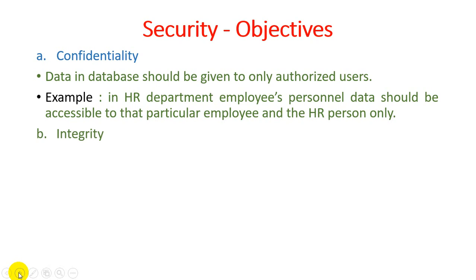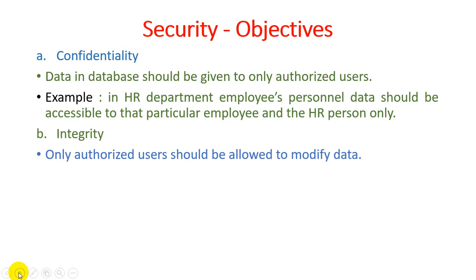Second is integrity — only authorized users should be allowed to modify data. The difference between confidentiality and integrity is: confidentiality means you can access data within a particular authorization group, while integrity means you have permission to both access and modify that data. Confidentiality means show the data securely, while integrity means you can also modify it as per requirements.